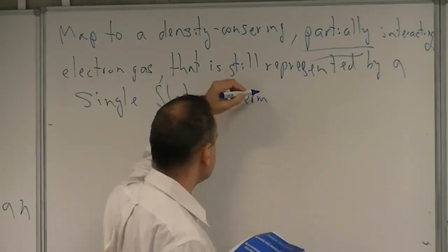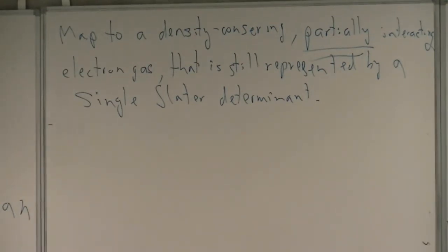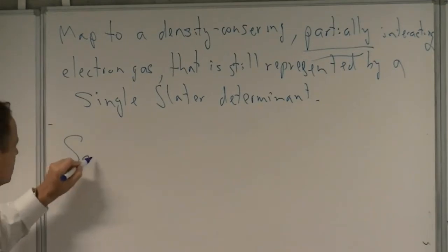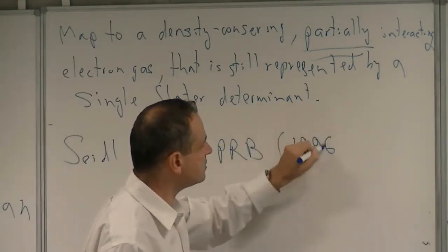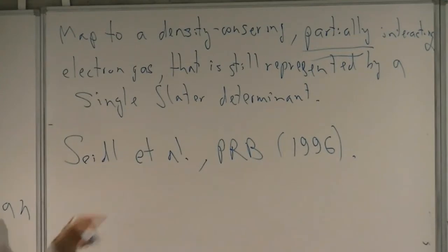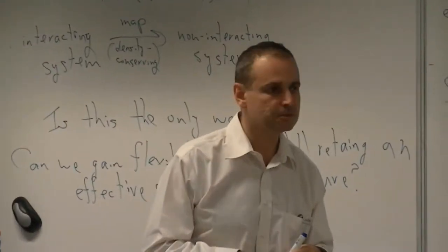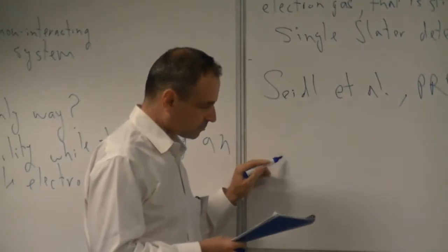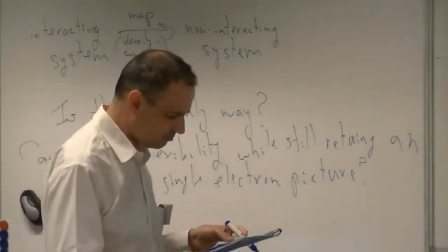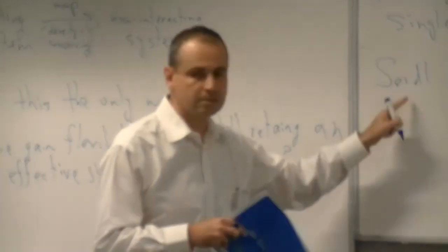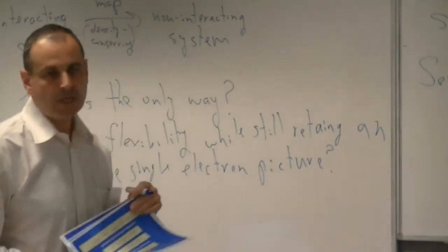The big idea is that we are going to map to a density-conserving, partially interacting electron gas, but one that is still represented by a single Slater determinant. This representation by a single Slater determinant is what allows us to retain an effective single-electron picture. This idea comes from a Physical Review B article from 1996, which includes authors who are present here and were mentioned several times during this workshop.